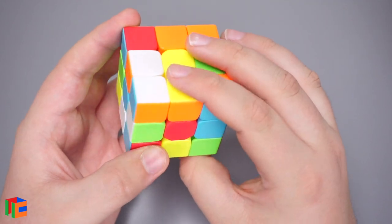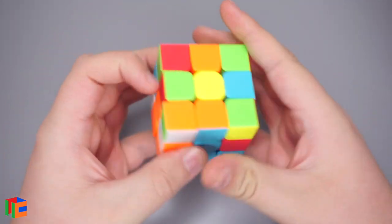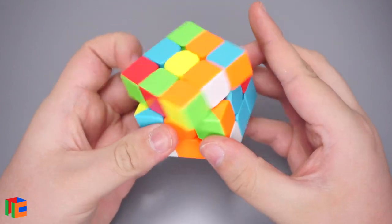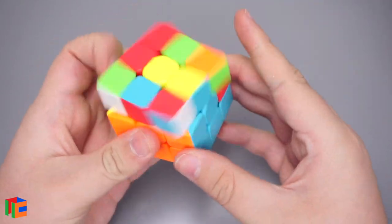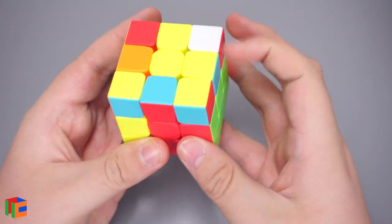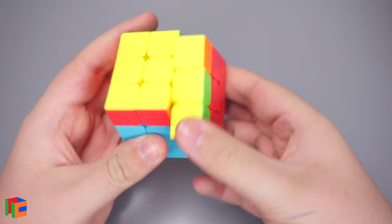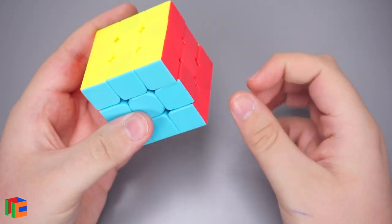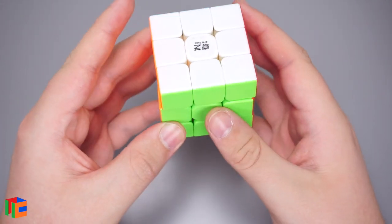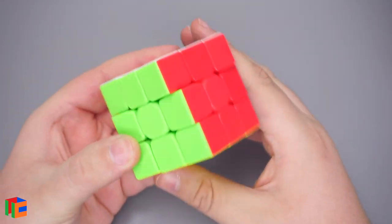It actually feels kind of similar to an Aulong. At this point, I would say that my main is the Valk M. But, the Aulong is still one of my favorite cubes. Although, my Aulong has kind of gotten a little bit too old. But, this cube feels really nice and really similar to it. I still like the Aulong V2 feeling just a little bit better.